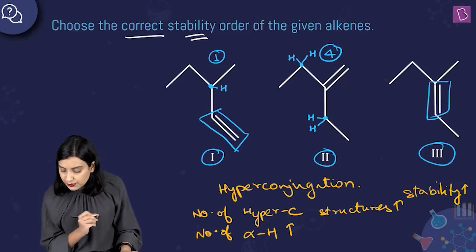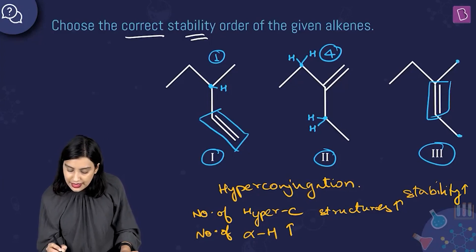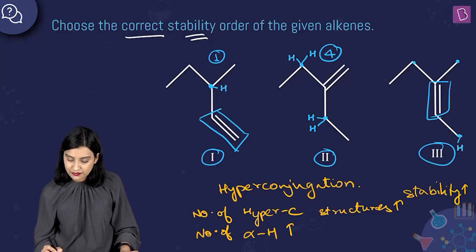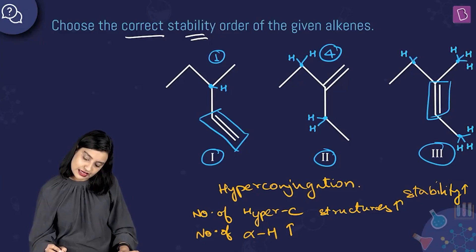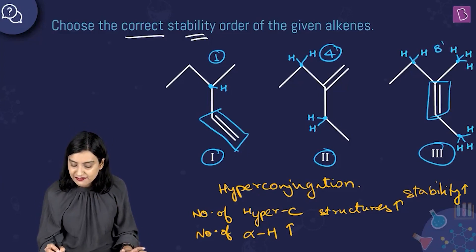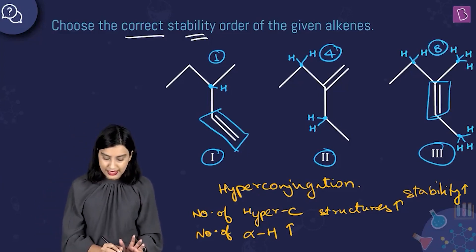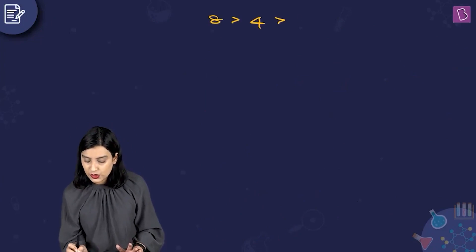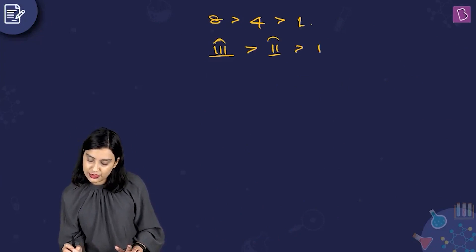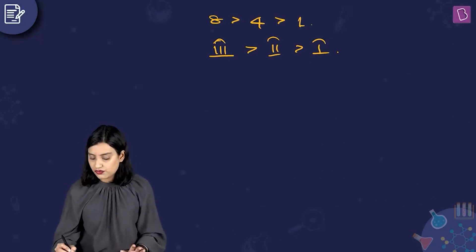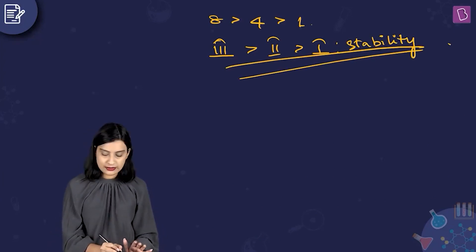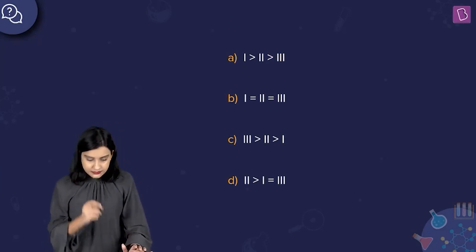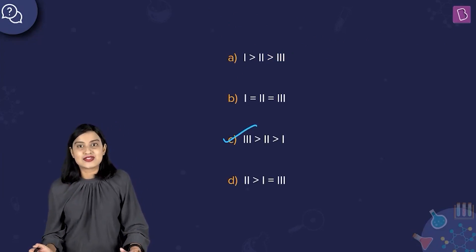In the case of structure three, the alpha carbons are on three positions adjacent to the functional group. You have three alpha hydrogens on one side, three on another, and two on the third — giving a total of eight alpha hydrogens. So the order is: structure 3 (eight) > structure 2 (four) > structure 1 (one), which means the stability also follows this order: 3 > 2 > 1.